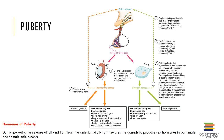Hormones of puberty were discussed previously. During puberty, there is an increase in the release of LH and FSH from the anterior pituitary, which stimulates the gonads to produce sex hormones in both men and women, although the outcomes are different for each sex.